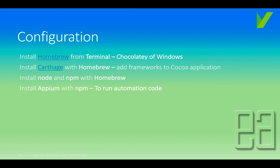The configuration of Katalon Studio is not a big process — download it just as on Windows 10, double-click, and you'll be prompted to activate the product. But before starting to work with the iOS application on Mac, we need to install Homebrew from the terminal. Homebrew is like Chocolatey for Windows — a package manager for Mac. Then install Carthage via Homebrew to add frameworks to Cocoa applications. Next, install Node and NPM with Homebrew. And finally, install Appium, which is the tool that will work with the iOS application to identify elements within it.